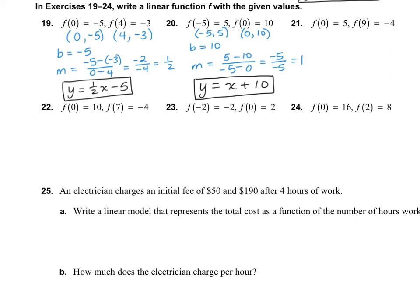I'll do one more with you. Number 21: we have 0 comma 5 and 9 comma negative 4. The y-intercept is 5, and the slope is 5 minus negative 4 over 0 minus 9 — that's positive 9 over negative 9, which is negative 1. So the answer is y equals negative x plus 5.